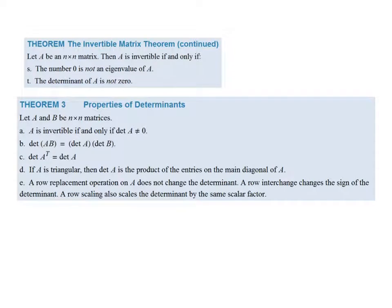We get a couple of theorems on this next slide. The first is the invertible matrix theorem — that should look familiar, but now we add two more entries: a matrix being invertible is equivalent to 0 not being an eigenvalue of A, and the determinant of A not being 0. We also get theorem 3, properties of determinants — essentially review: A is invertible iff the determinant is not 0; determinant of a product equals product of determinants; determinant of the transpose equals determinant of the original; if A is triangular, the determinant is the product along the diagonal; and row replacement does not change the determinant.